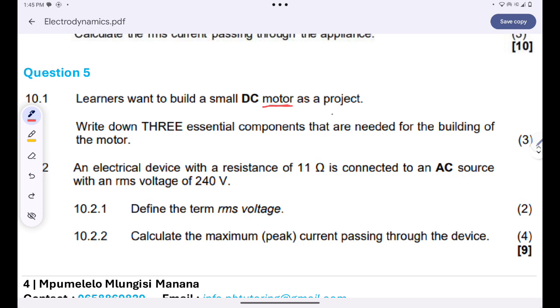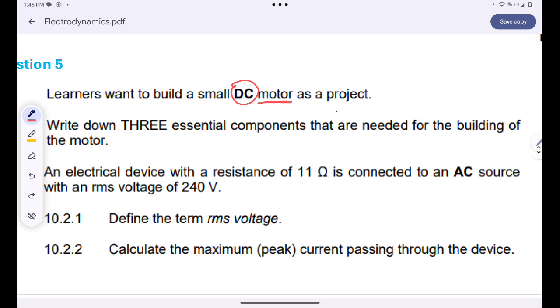And then secondly, we will need split ring commutators. Why do we need split ring commutators? Because we are dealing with a DC motor, a direct current motor. If it was an AC motor, we were going to use slip ring commutators. But since we are dealing with a DC, that's why we will need split rings.